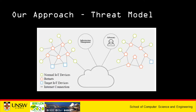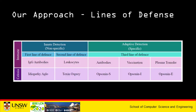Our threat model assumes a number of internet-connected IoT devices in the presence of adversaries. These devices may contain infected devices with botnet programs, as shown by orange color. These botnets are not only capable of planting distributed denial of service attacks but are also capable of converting target IoT devices into botnets. Our work provides detection in layers called lines of defense, as provided by the human immune system.